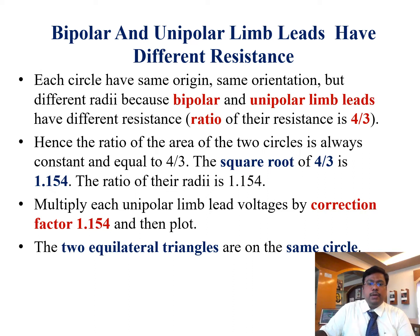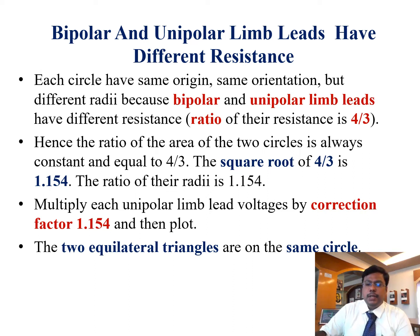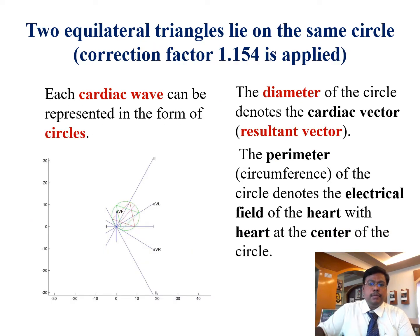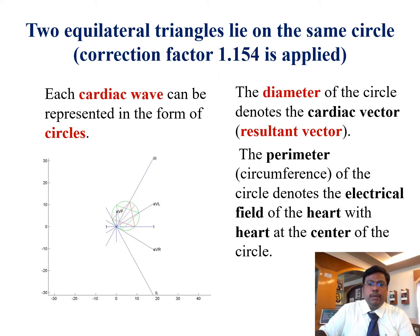Multiply each unipolar limb voltage by the correction factor 1.154 and then plot. Now the two equilateral triangles lie on the same circle. From the diagram, it is very clear the two equilateral triangles lie on the same circle after applying the correction factor 1.154.